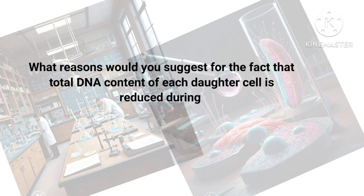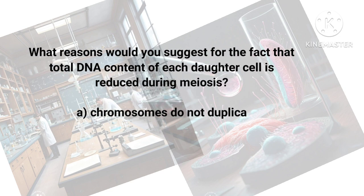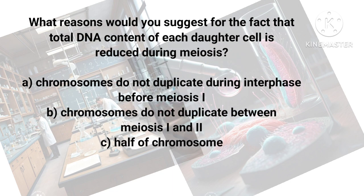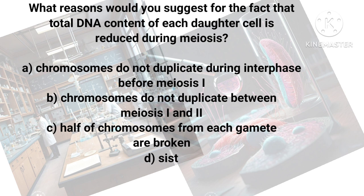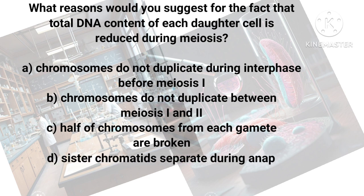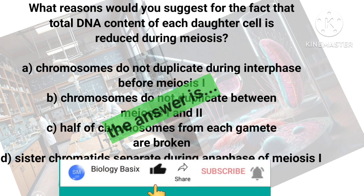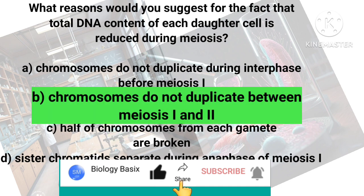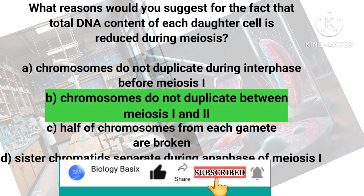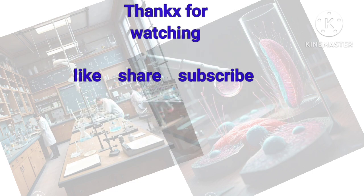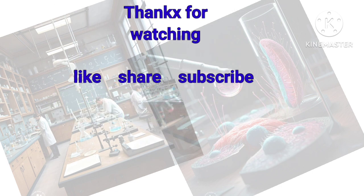What reasons would you suggest for the fact that the total DNA content of each daughter cell is reduced during meiosis? After meiosis, each daughter cell has half the number of chromosomes of the parent cell. The answer is that chromosomes do not duplicate between meiosis one and meiosis two.